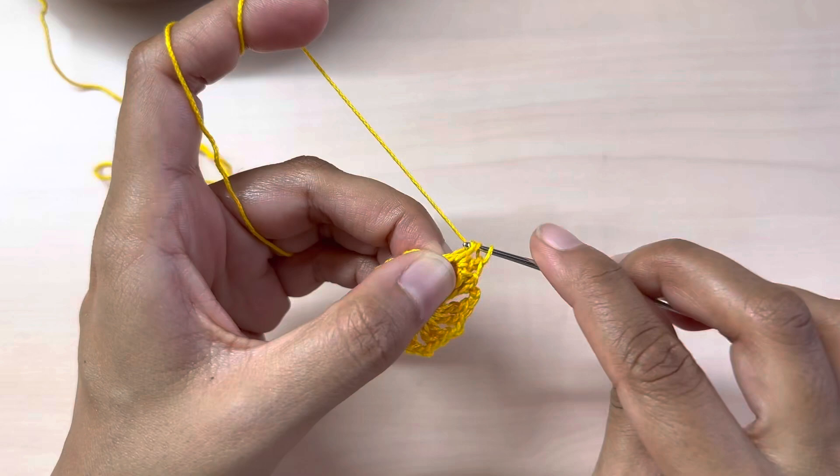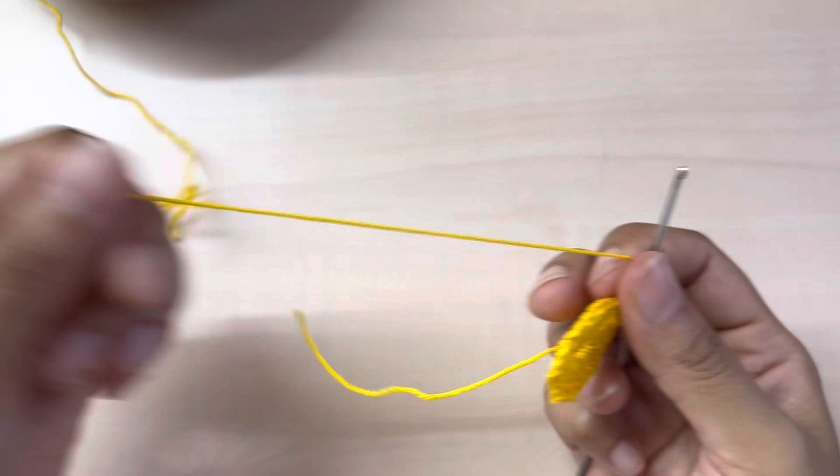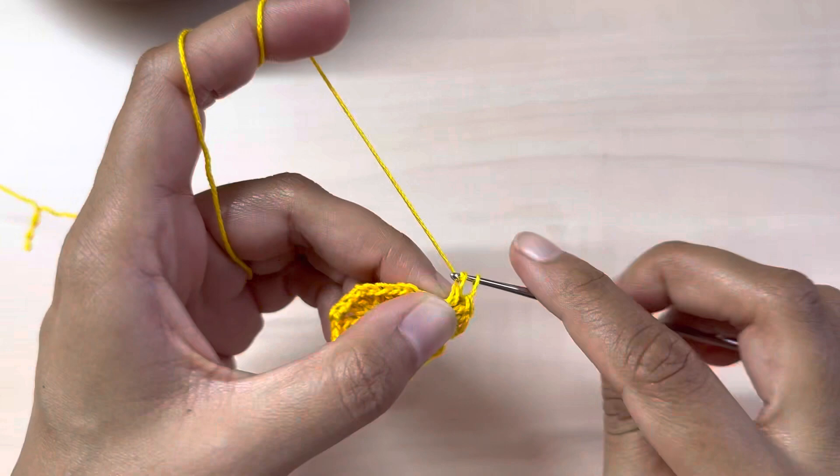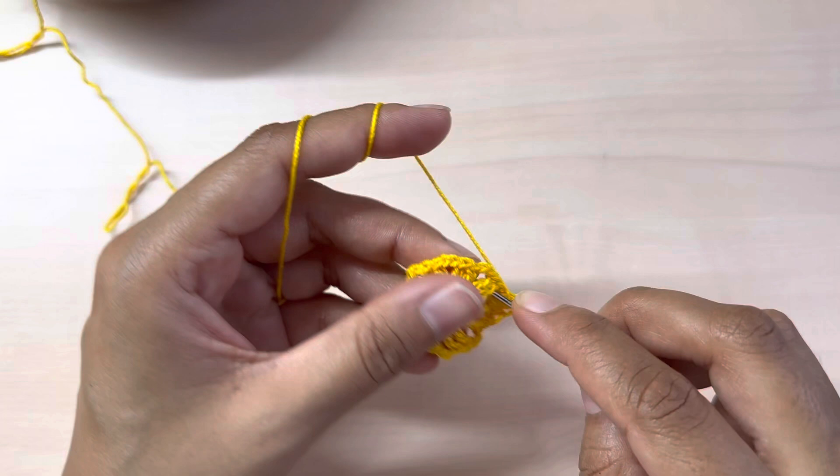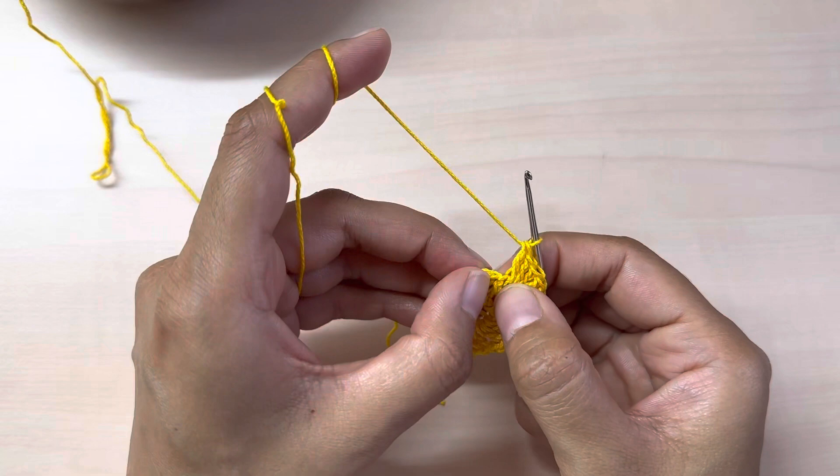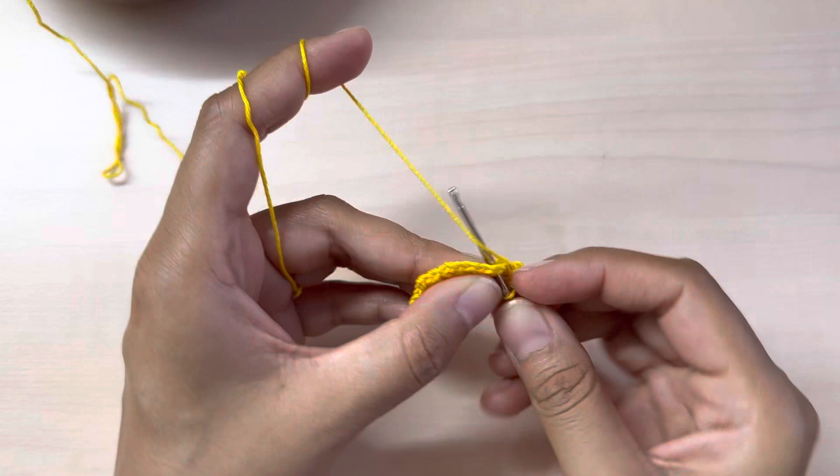Two, three, four, four, five, and six. Once you've done that, slip stitch into the space between these two double crochets.